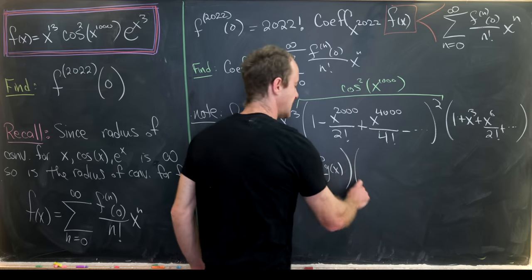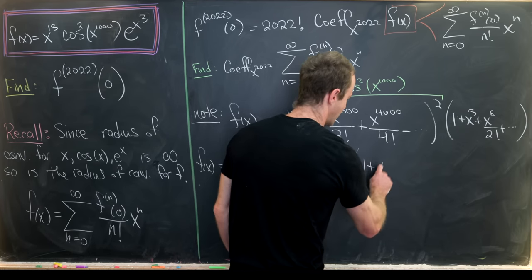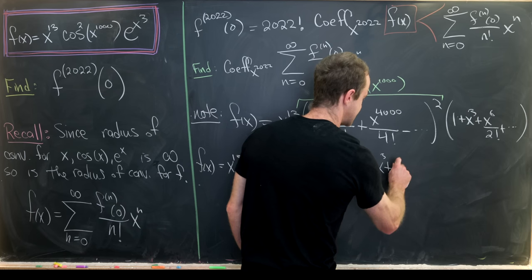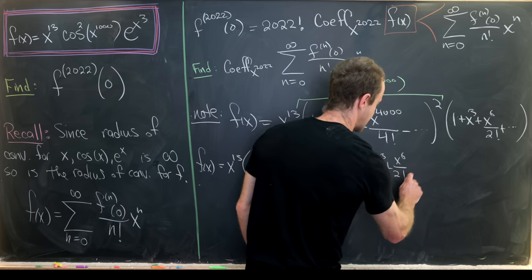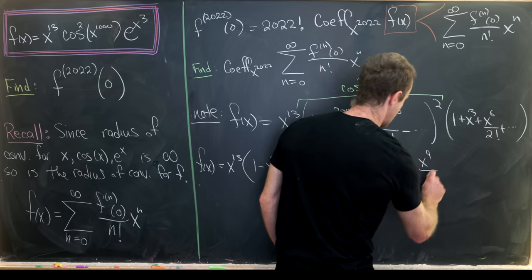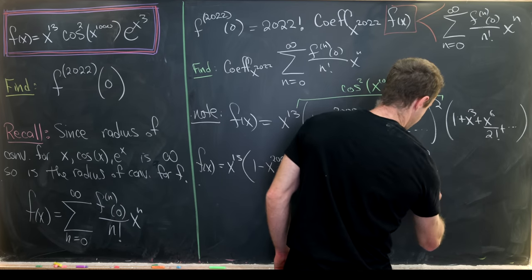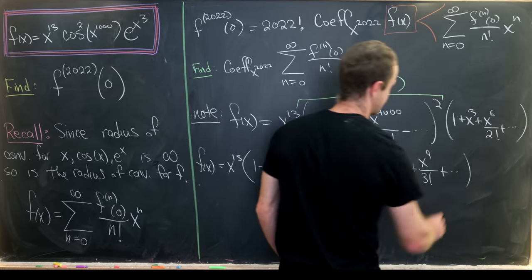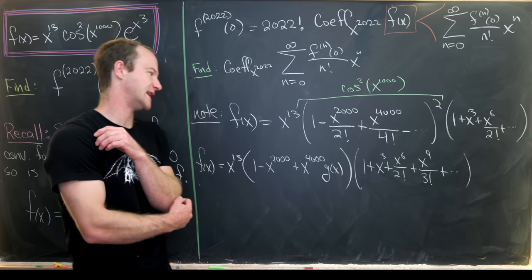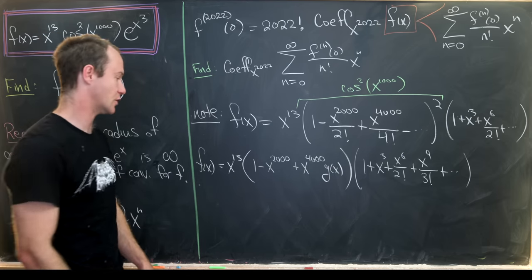We have f of x equals x to the 13 times 1 minus x to the 2000 and then I'm going to write it like this plus x to the 4000 times a new function g of x where that's kind of our remainder after multiplying this power series to itself and then collecting all of those terms. So this 1 comes from 1 times 1 and then notice these double up just kind of by foiling these things out.